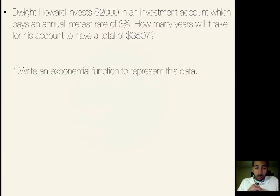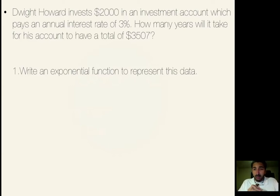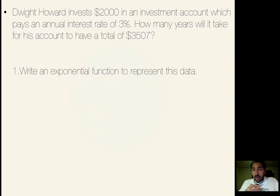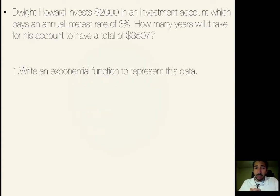Our first question is: Dwight Howard invests $2,000 in an investment account which pays an annual interest rate of 3%. How many years will it take for his account to have a total of $3,507?